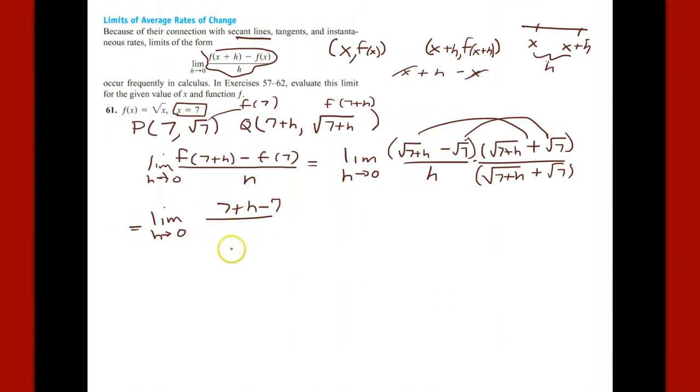And that's all over h, but not h by itself—we have this guy too. Don't distribute in the denominator, leave it as is: √(7+h) + √7. All that quantity is multiplied by h. This is our issue, this is what's causing us to divide by 0.